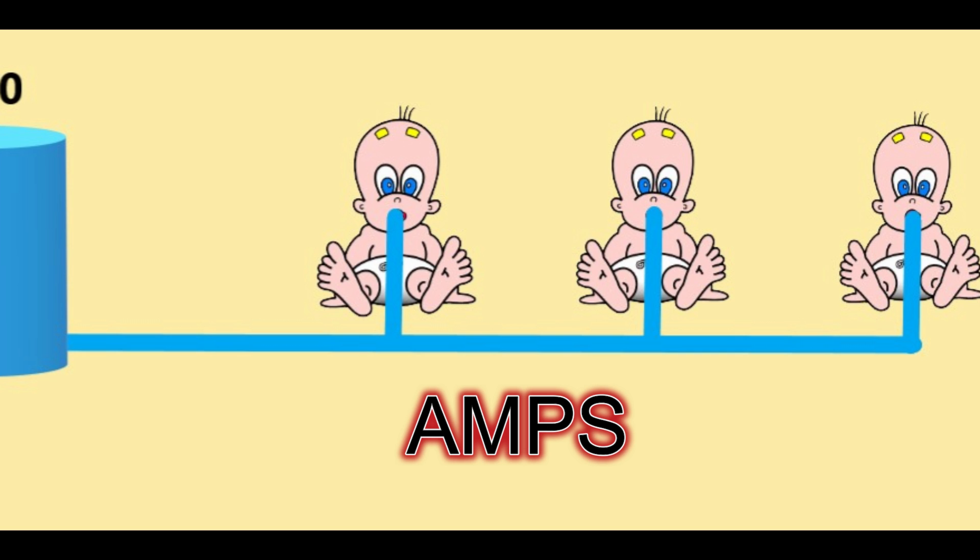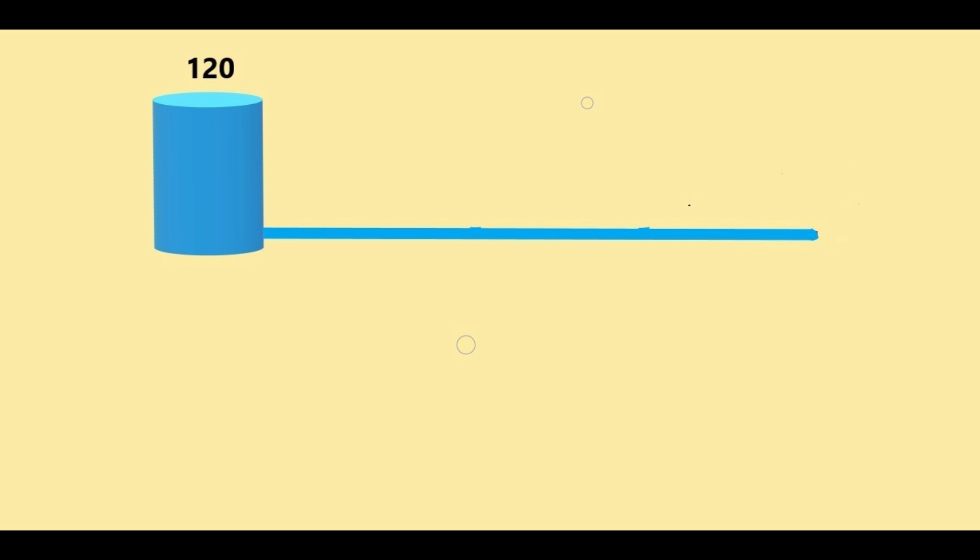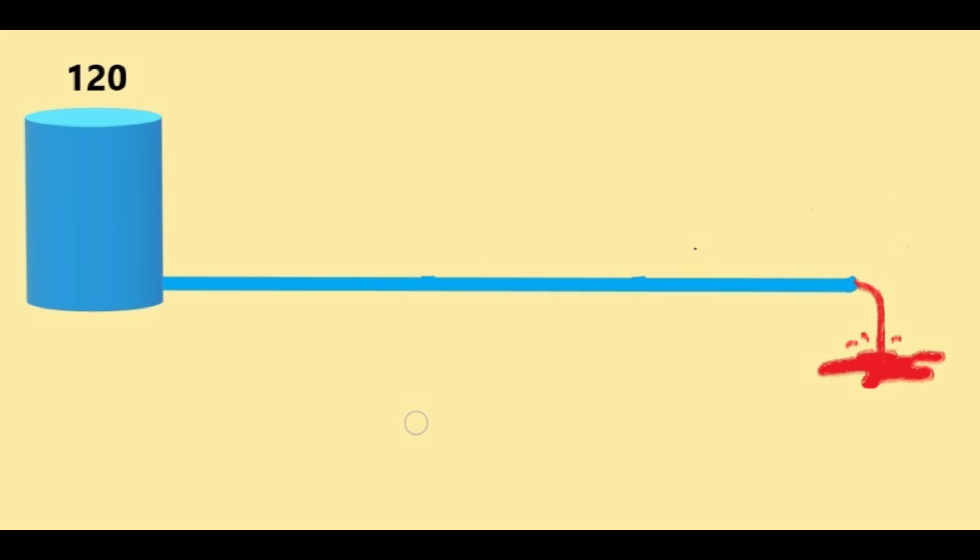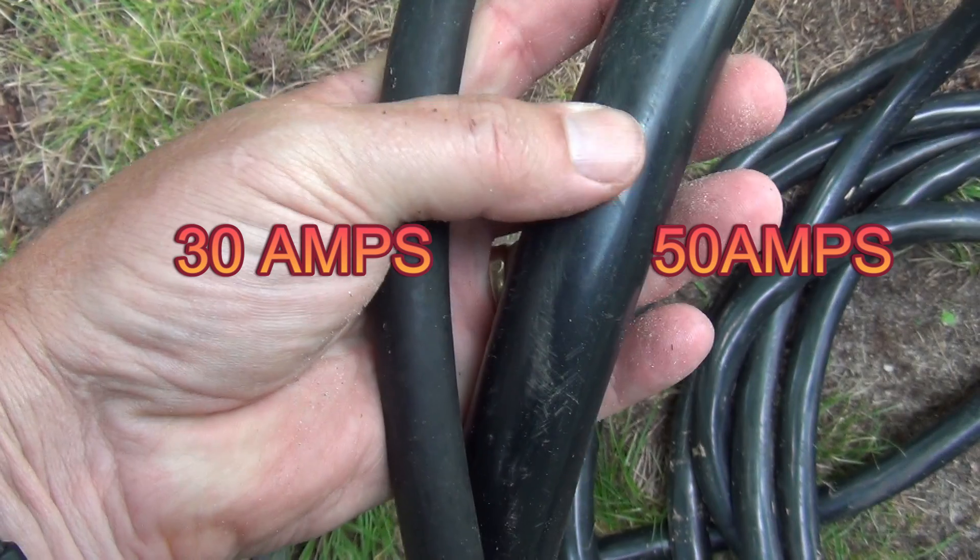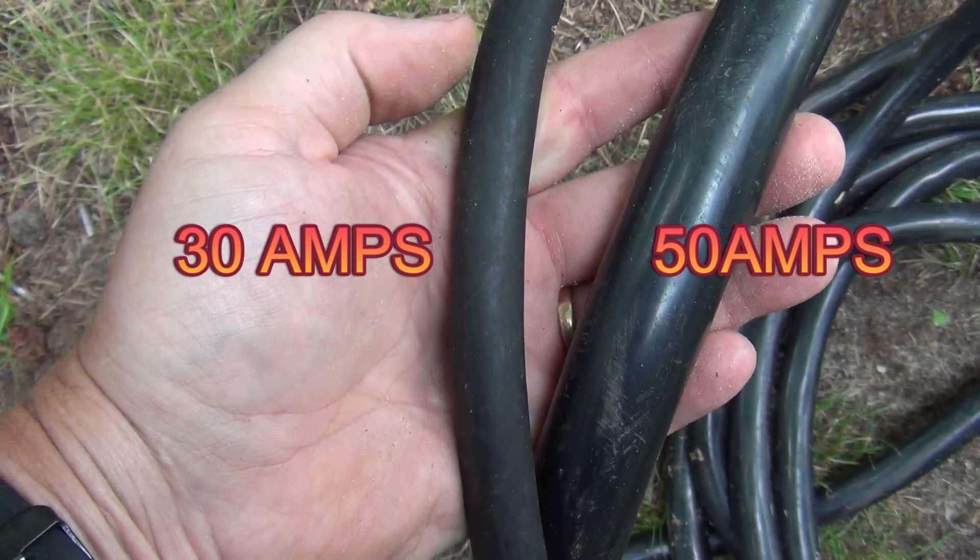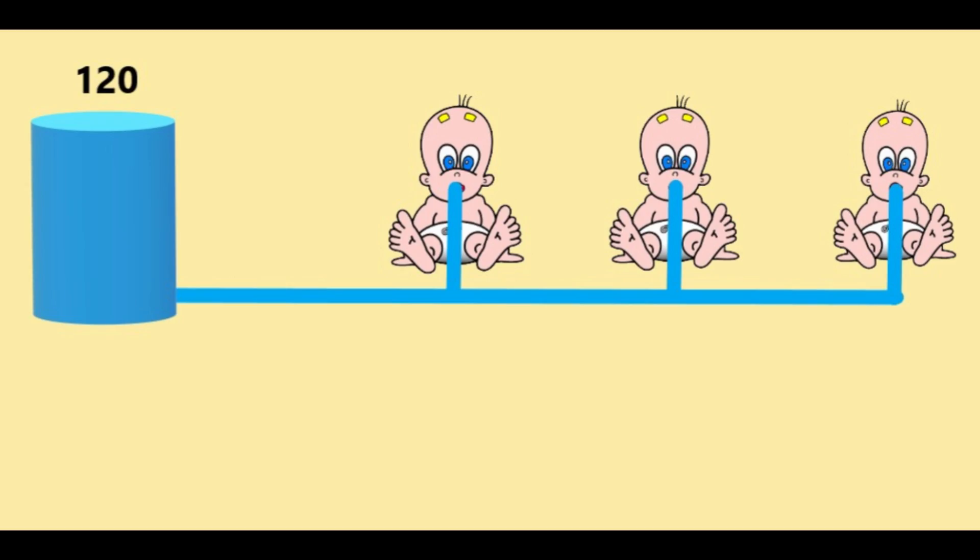Now let's talk about amperage, or amps. That's how much juice can flow through the hose. The bigger the hose, the more juice that can flow. Likewise, the larger the amperage, the more electricity can flow through the system.